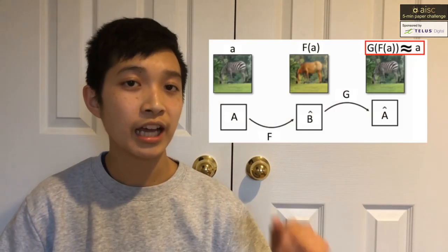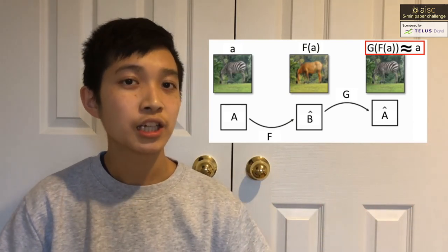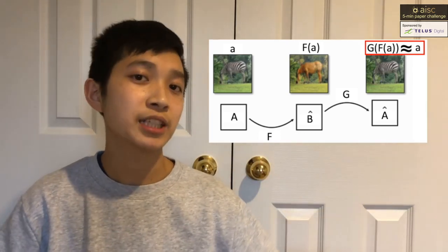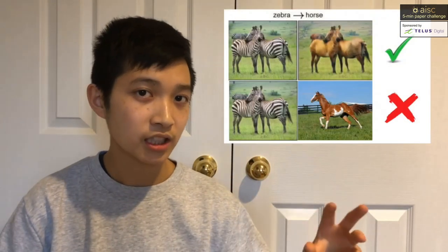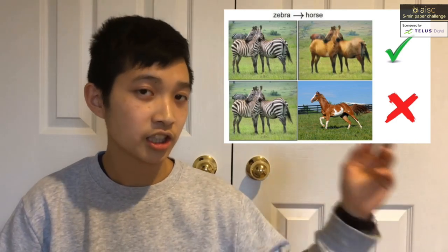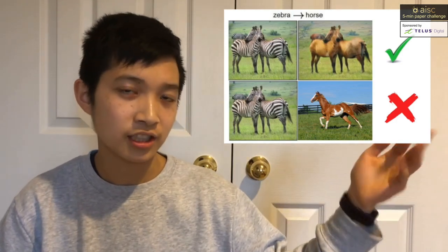We'll also have two cycle consistency losses. The first one will ensure that F of G of A is as close as possible to A. This basically means that if we take an image of zebras, map it to horses, and then map it back to zebras again, that picture should be as close as possible to the original image — meaning we actually want those zebras to be changed into horses, not just generate some random picture of horses.